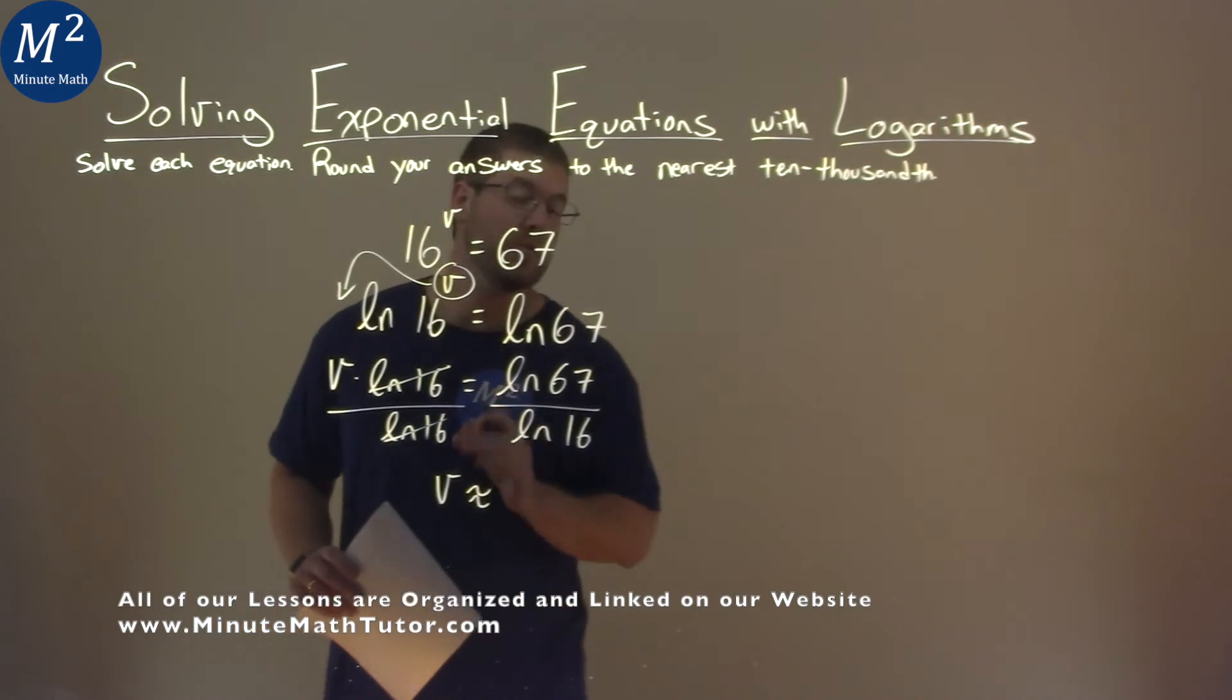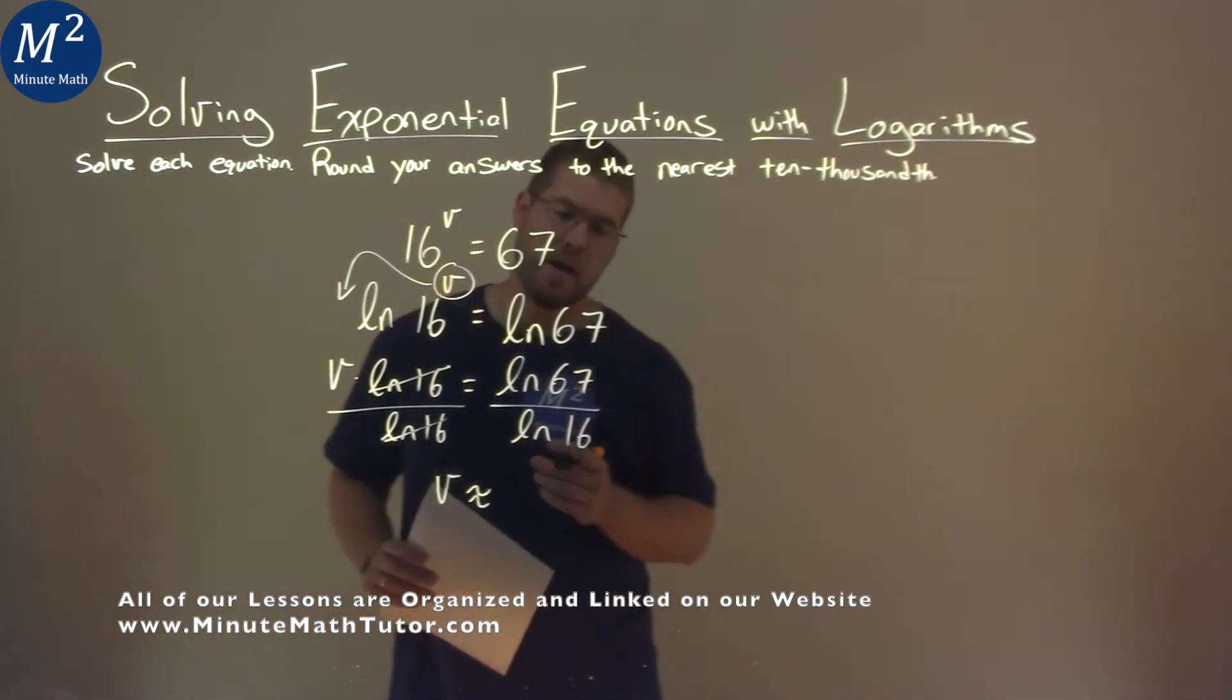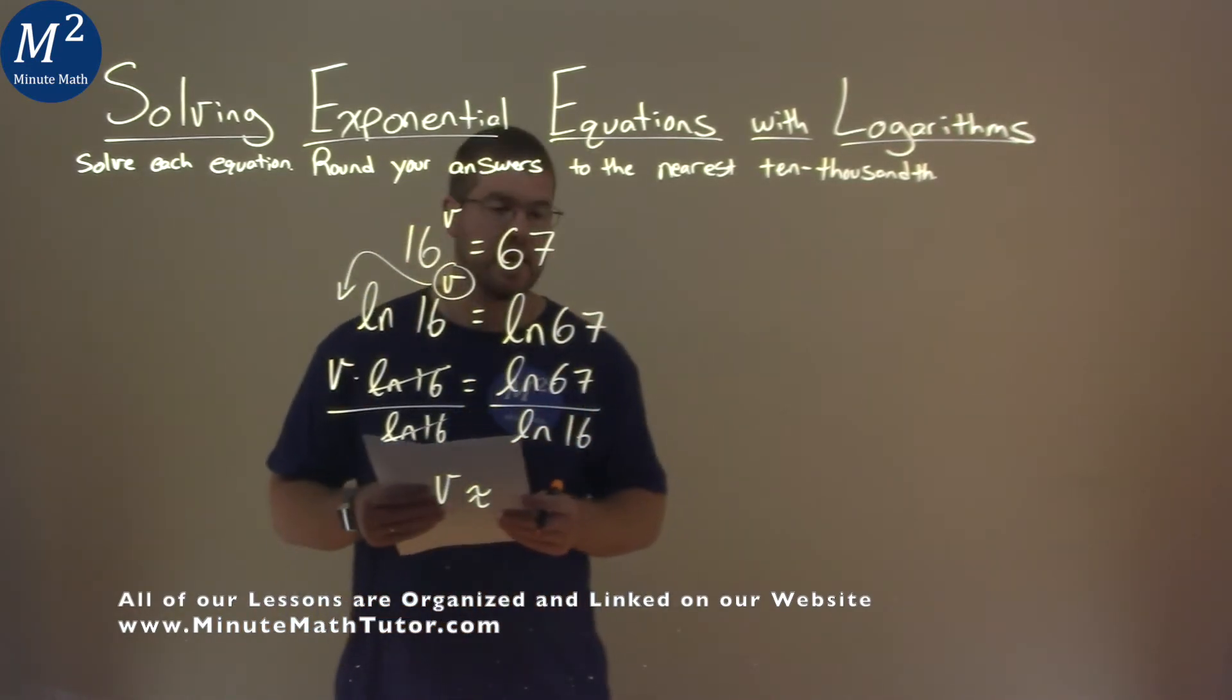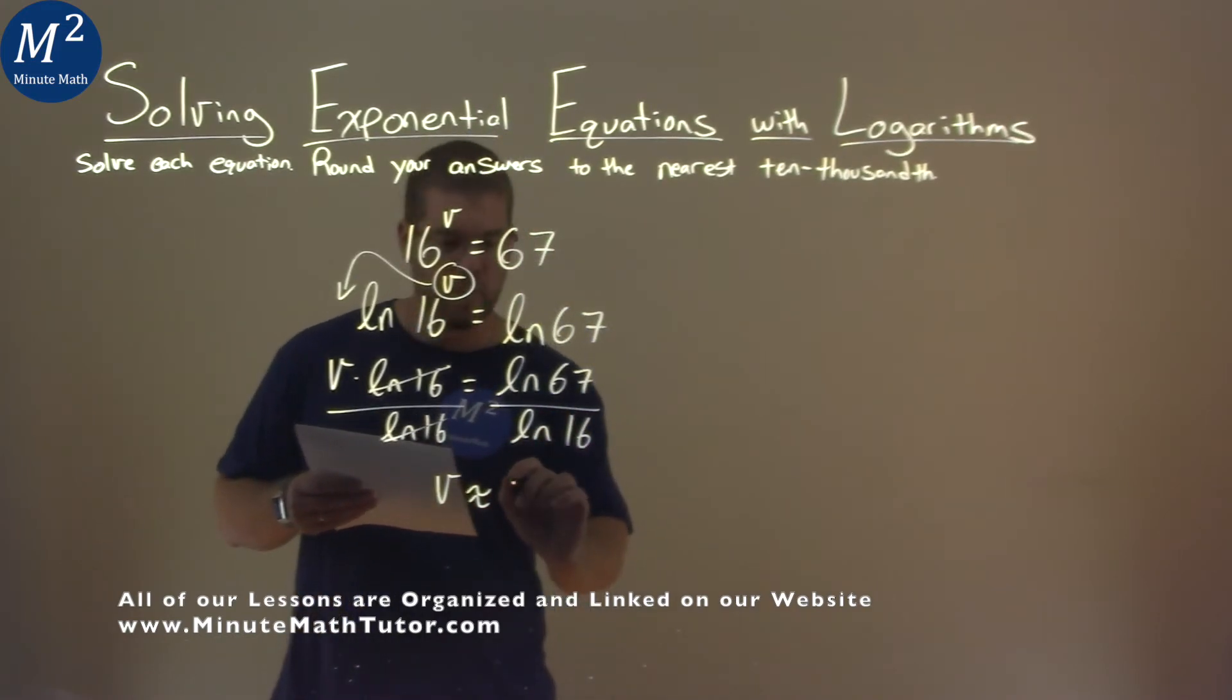It's going to be approximately, because we're going to use our calculator here, and we're going to round, and the natural log of 67 divided by the natural log of 16 comes out to be 1.5165.